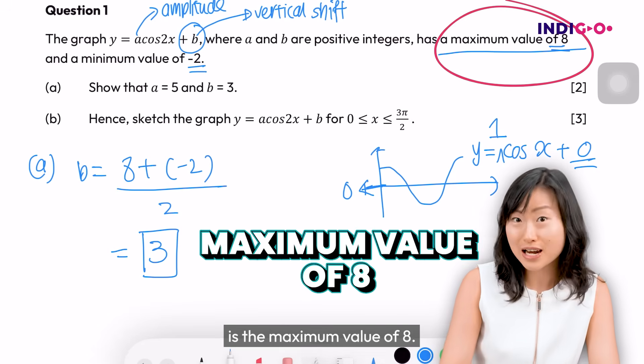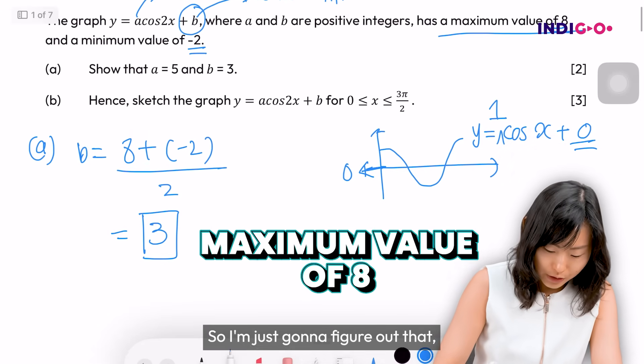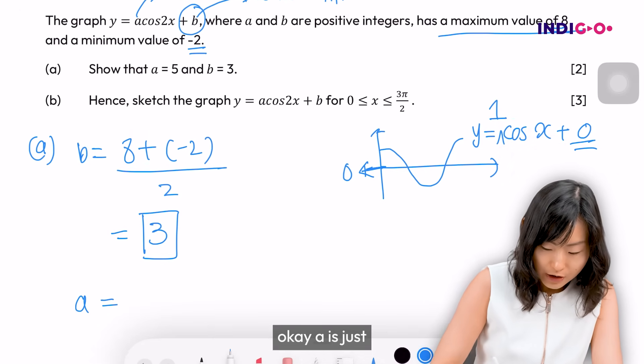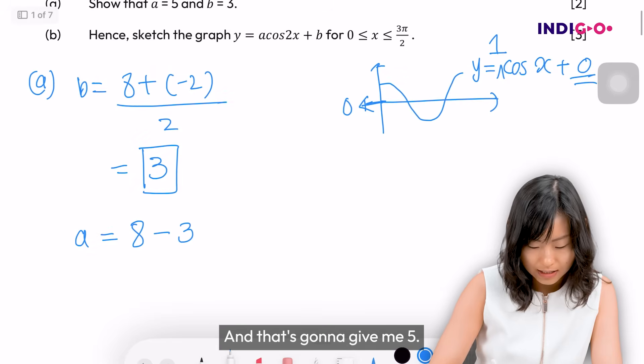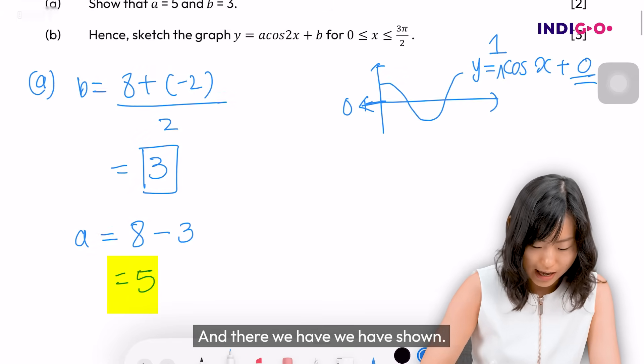So in this case here, the question already says the maximum value is 8. So I'm just going to figure out that a is just from the maximum of 8 minus the midpoint of 3, and that's going to give me 5. And there we have, we have shown it.